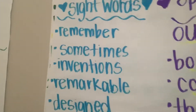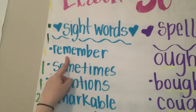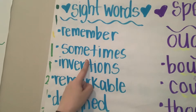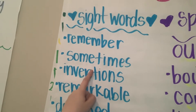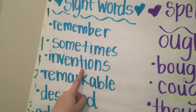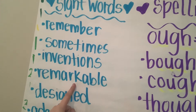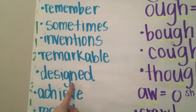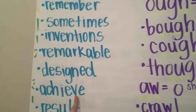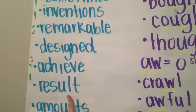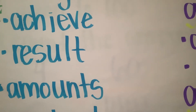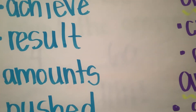Our first word is 'remember' — it's when you recall something that you know. 'Sometimes' — it's happening sometimes, yes, sometimes no. 'Inventions' are things that people make. 'Remarkable' is a synonym for outstanding. 'Designed' is something that someone creates. 'Achieve' — it's when you meet a goal. 'Result' is the outcome. 'Amounts' is how much of something. 'Pushed' — past tense action verb of push. And 'together' — that's with something.